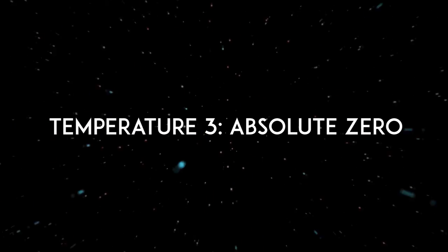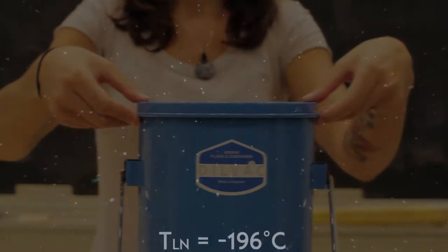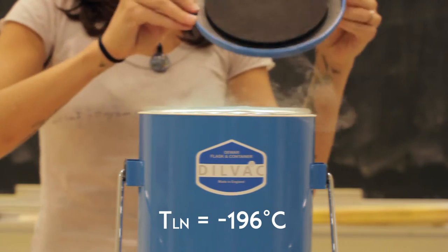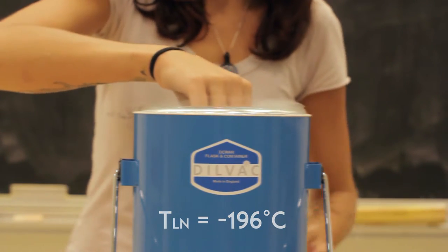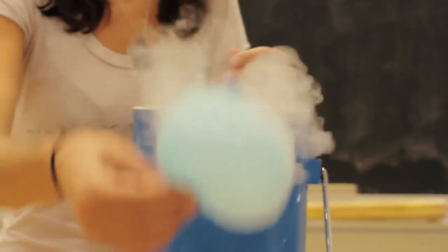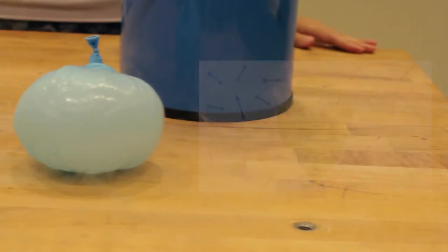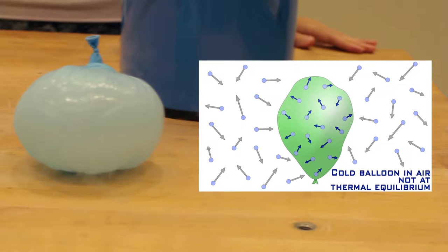In the first temperature video, we saw how placing a balloon in negative 196 degrees Celsius liquid nitrogen drastically reduced its size because the air particles were moving more slowly at the lower temperature and not exerting as much pressure on the interior surface of the balloon. We developed an understanding of temperature being related to the average velocity of gas particles.